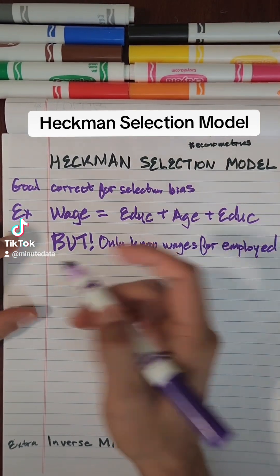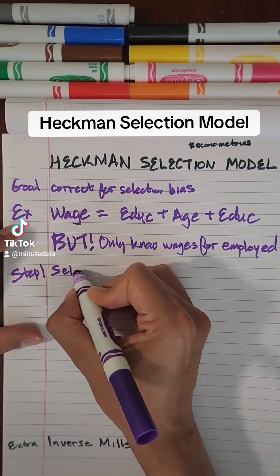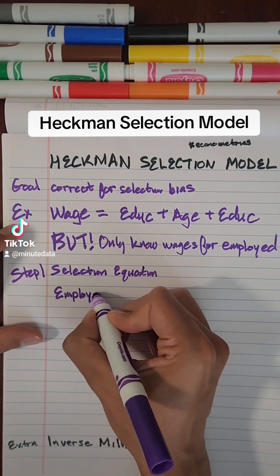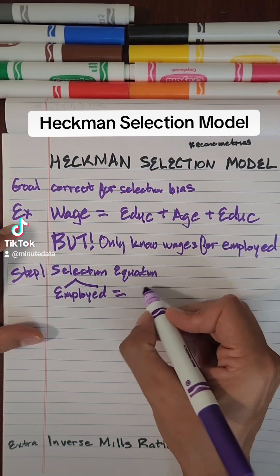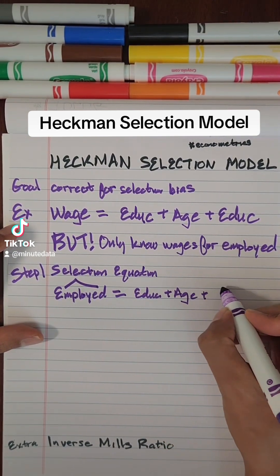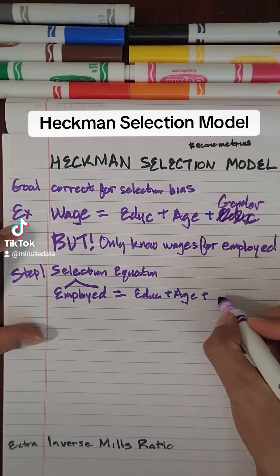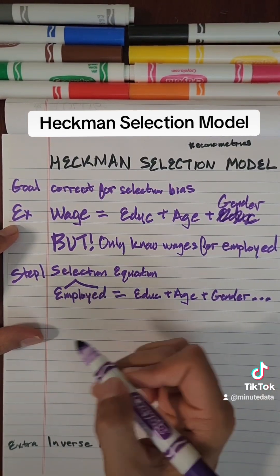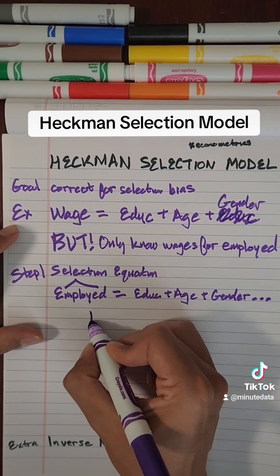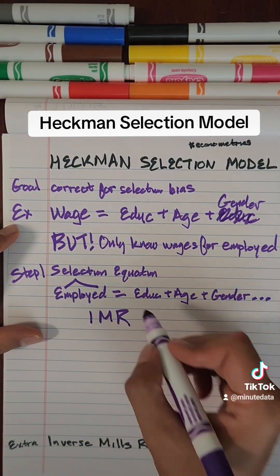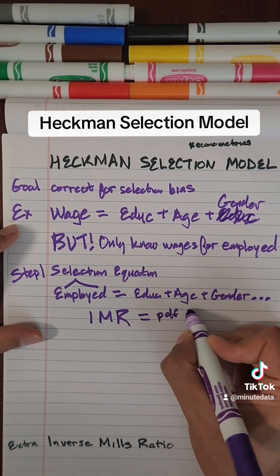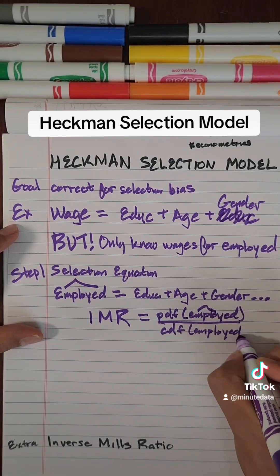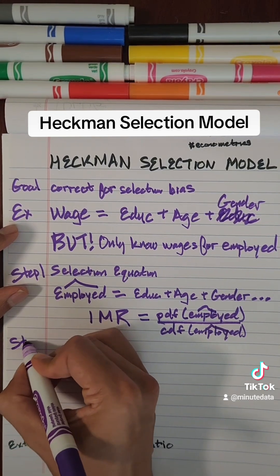Heckman's selection model has two steps. Step one is known as the selection equation, where we model the selection bias. In this case, we model the fact that they're employed, using our covariates: education, age, gender, etc. We want to take the probability of being employed and use it later — specifically something called the inverse mills ratio. The idea is that we're using the probability of being employed as a covariate itself, to account for that selection bias.